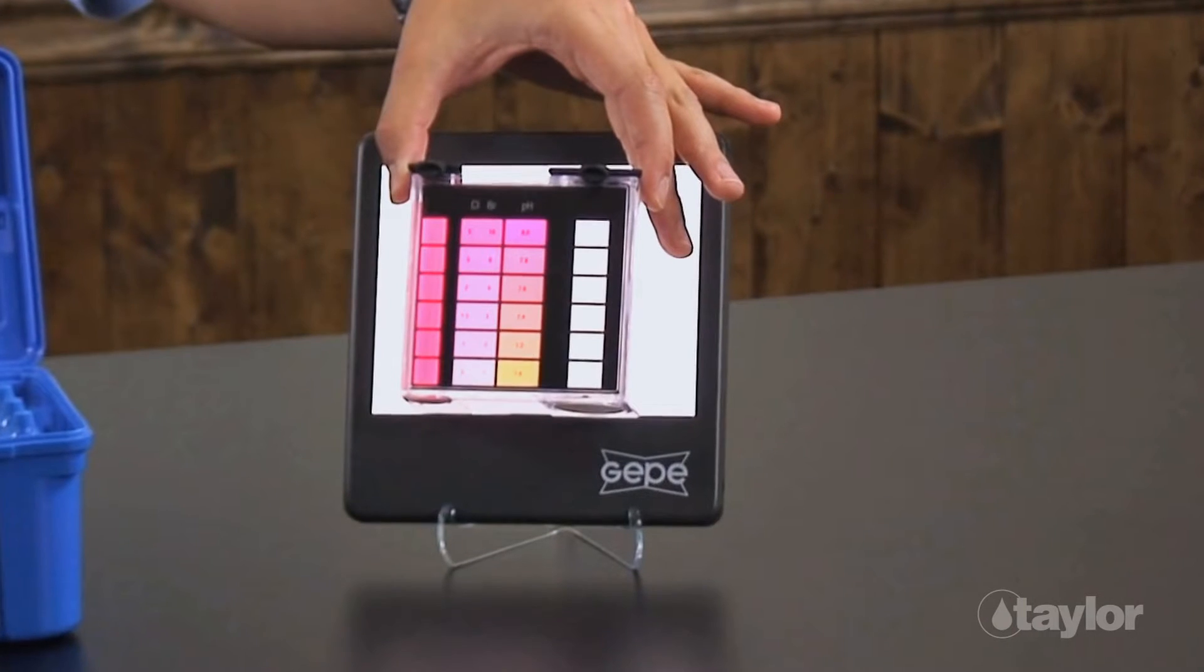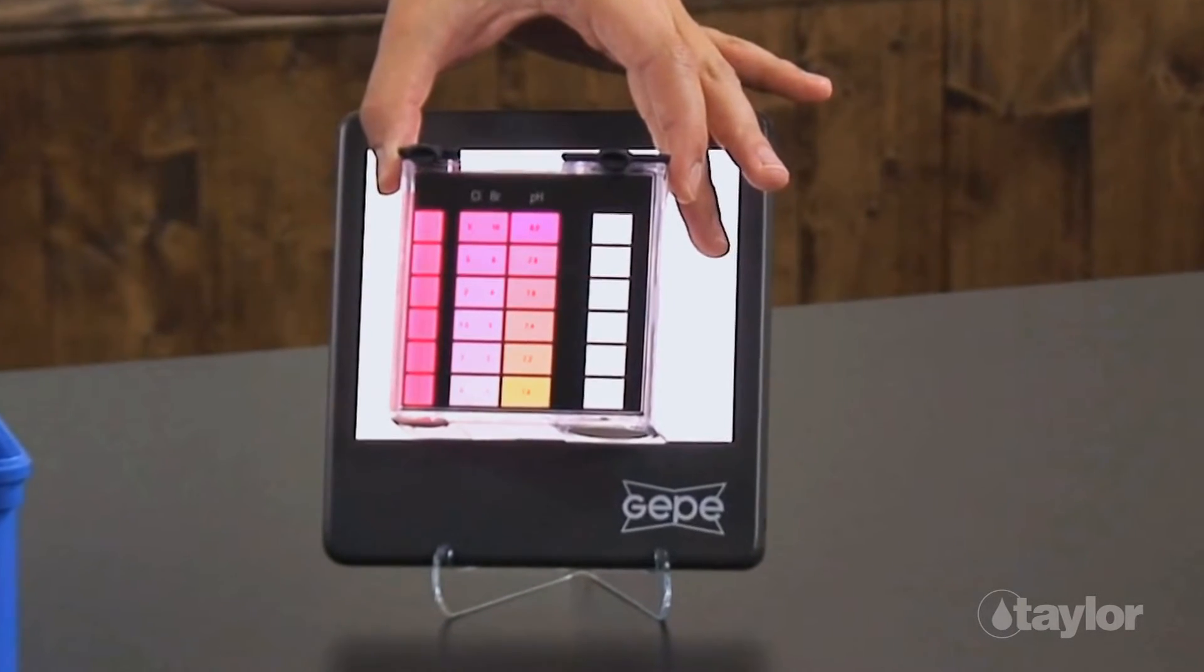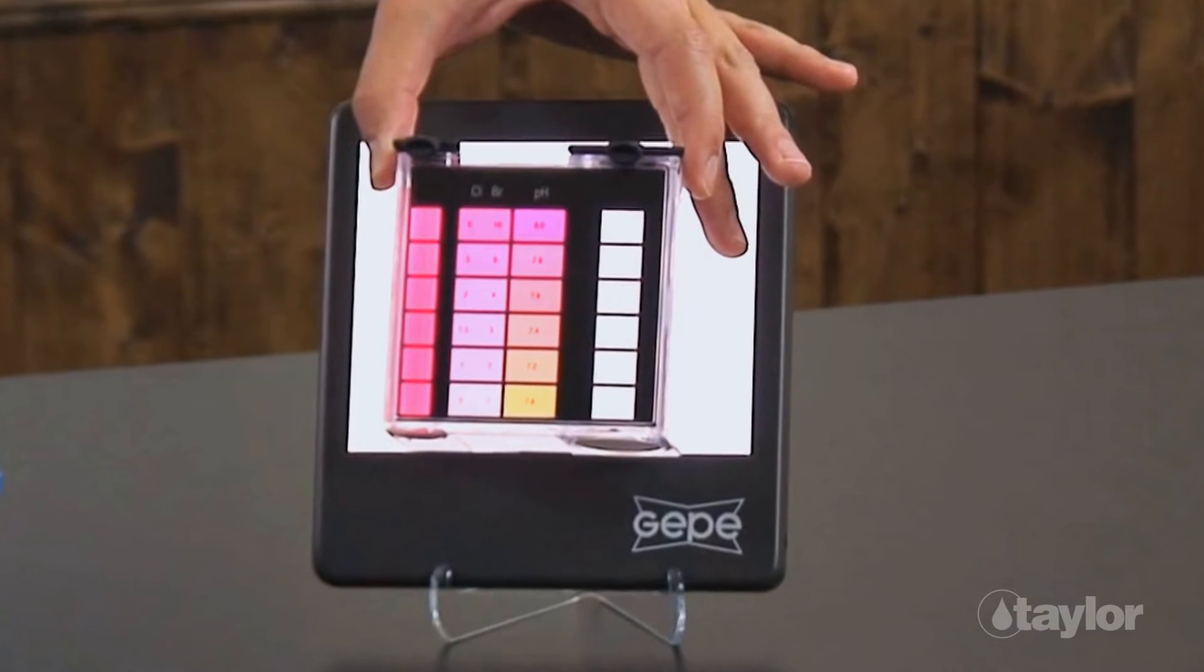When the color match appears to be 10 parts per million or darker, the sample should be diluted and a second test performed.